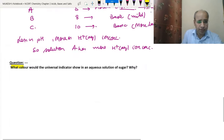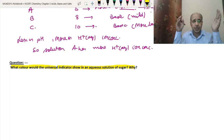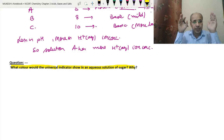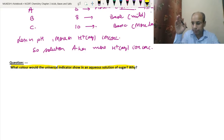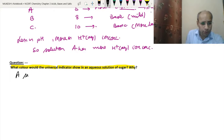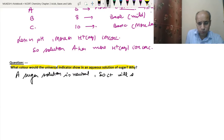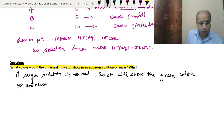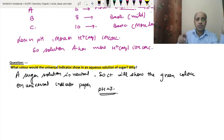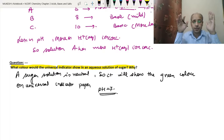The next question: what color would the universal indicator show in an aqueous solution of sugar? As we know, the aqueous solution of sugar is neutral in nature, so its pH is 7. When the pH is 7, it will show the green color on the universal indicator, as we have studied.